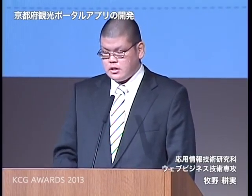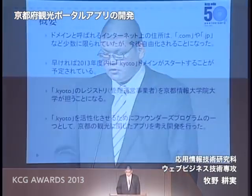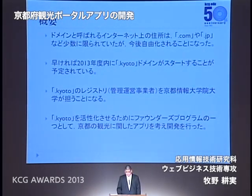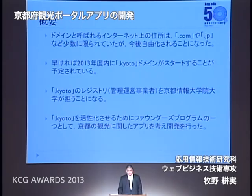フェイスブックやツイッターに自動的に投稿される仕組みになっています。いろんなところに工夫があって、それが非常に実用的で、とてもいいアプリだと思います。ドメインと呼ばれるインターネット上の住所は、これまでドットコムやドットJPなどの少数に限られてきました。ドット京都を活性化させるために、京都の観光に関したアプリを考え開発を行いました。